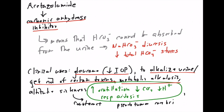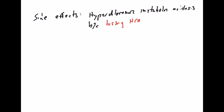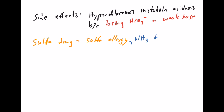To recap, remember all these different clinical uses — you're losing bicarb, which helps different alkalotic states. Now, what are some side effects of acetazolamide? The first is hyperchloremic metabolic acidosis — bicarb is a weak base, and if you're getting rid of it, you tip the scales to favor acid in the body. You also have to consider sulfa allergies, since acetazolamide is a sulfa drug. You can get ammonia toxicity, which we'll go over, and paresthesias.